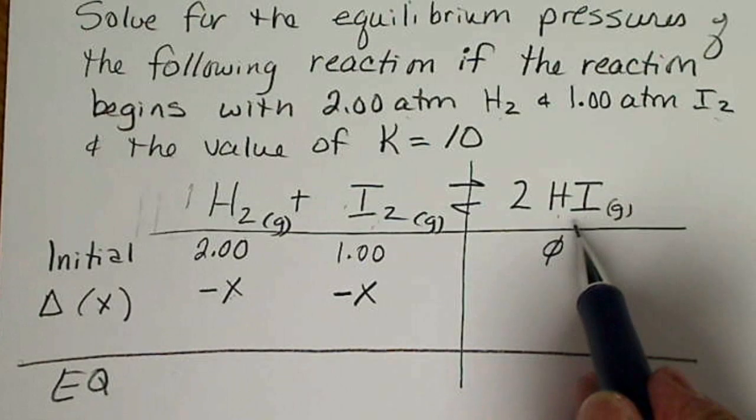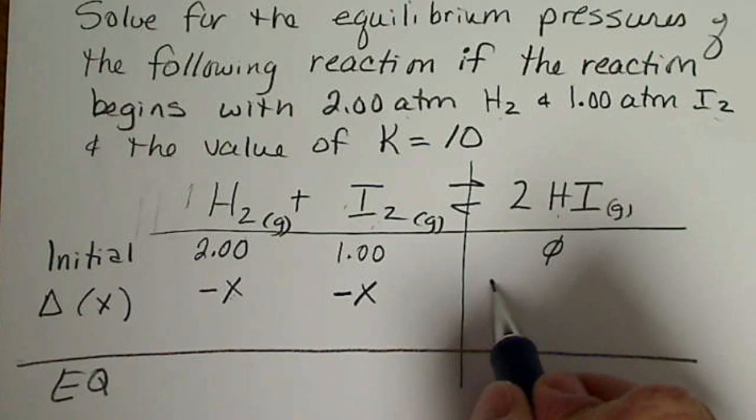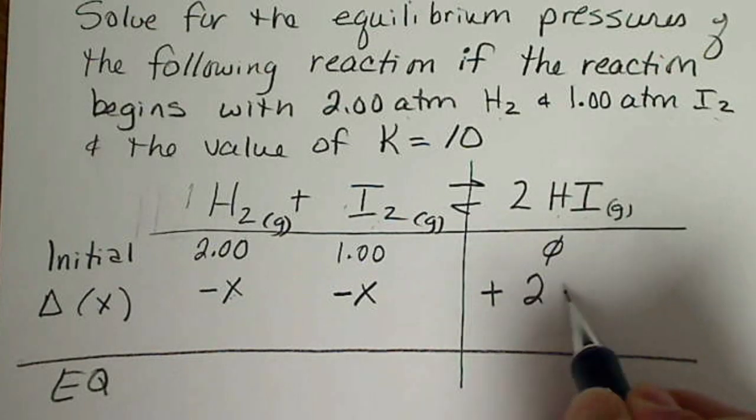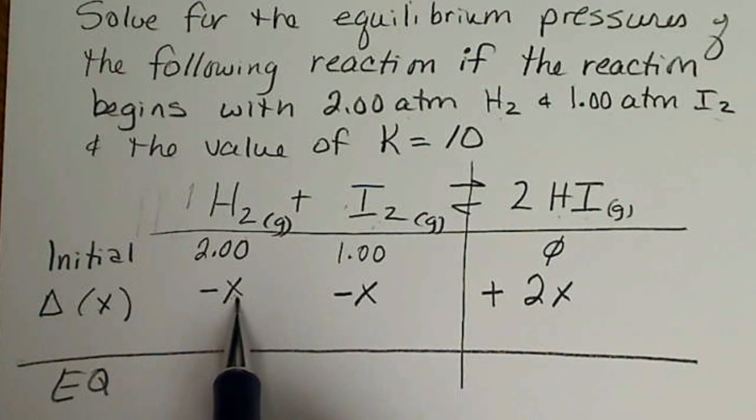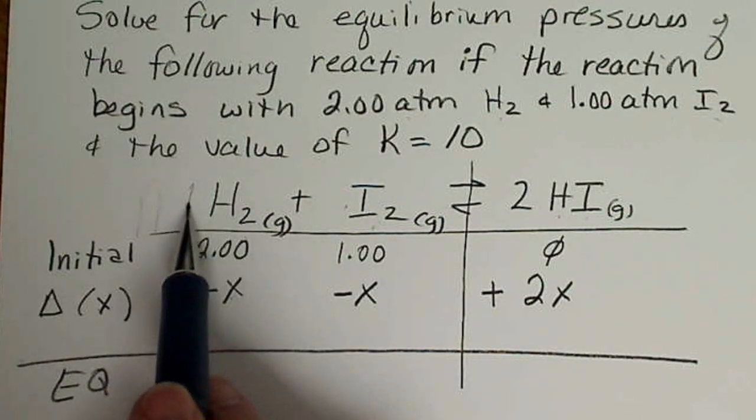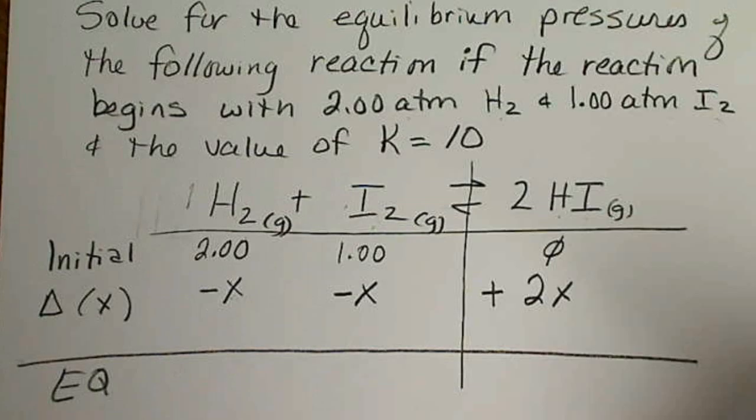And then I'm going to make products, so this is going to be adding 2X. So it's best if the change that we call X is the change in something that there's only one of, and that way we don't end up with any fractions.